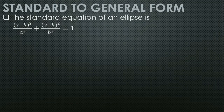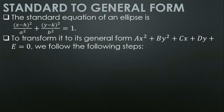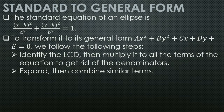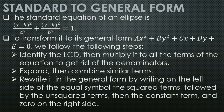Standard to general form. To rewrite a standard equation of an ellipse to its general form Ax² + By² + Cx + Dy + E = 0: first, identify the LCD and multiply it to all terms to eliminate denominators; second, expand and combine similar terms; third, rewrite with squared terms first, then unsquared terms, then the constant, with 0 on the right side.